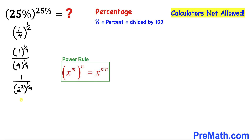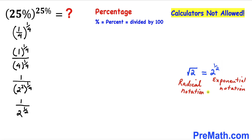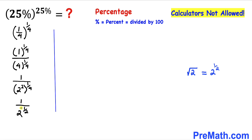So the expression becomes 1 divided by 2^(1/2). Let's recall the basic rule: the square root of 2 can be written as 2^(1/2), where the square root of 2 is our radical notation and 2^(1/2) is our exponential notation. So therefore this can be written in the denominator as the square root of 2, giving us 1 divided by √2.